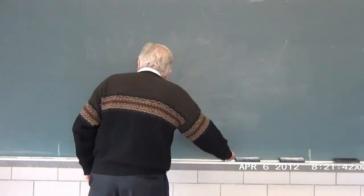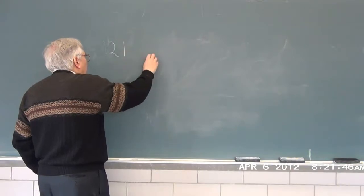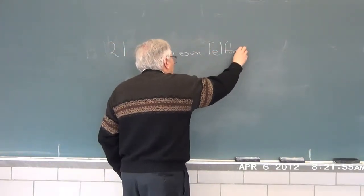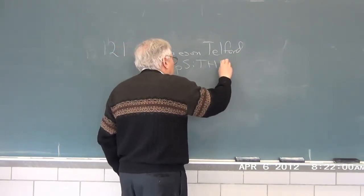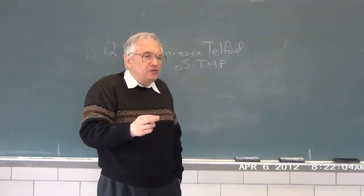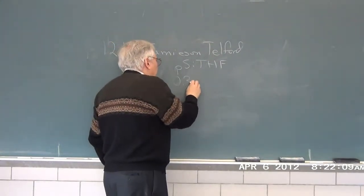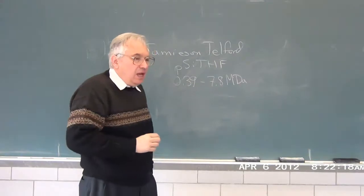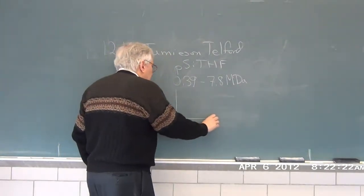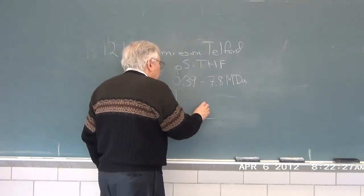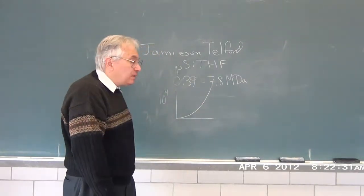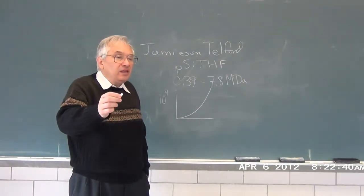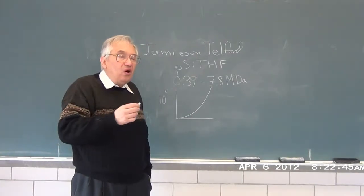We start with Figure 12.1, work of Jameson and Telford, looking at polystyrene in tetrahydrofuran — as classical a polymer system as you can study. They looked at materials ranging in molecular weight from 0.39 to 7.8 megadaltons, and their viscosity measurements cover about four orders of magnitude. The measurements look like stretched exponentials. Looking at the figure, you can see that the stretched exponentials really describe the measurements accurately through all concentrations studied.